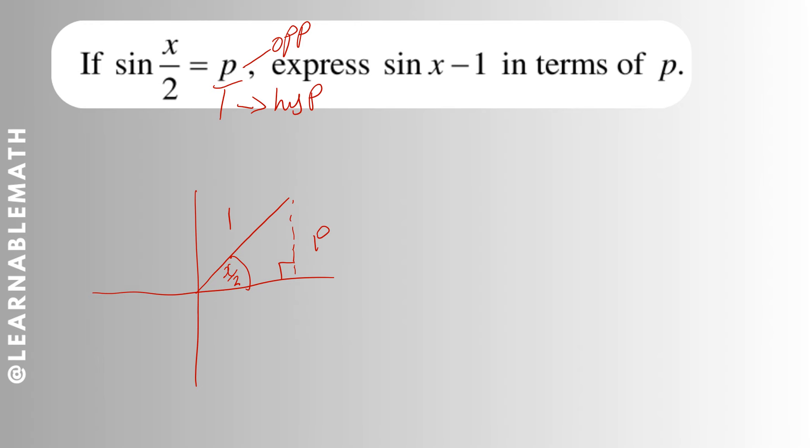Obviously p will be opposite and one will be the hypotenuse. When you solve for x here using Pythagorean theorem, 1² = p² + x², then you have √(1 - p²) as your x, the adjacent side.